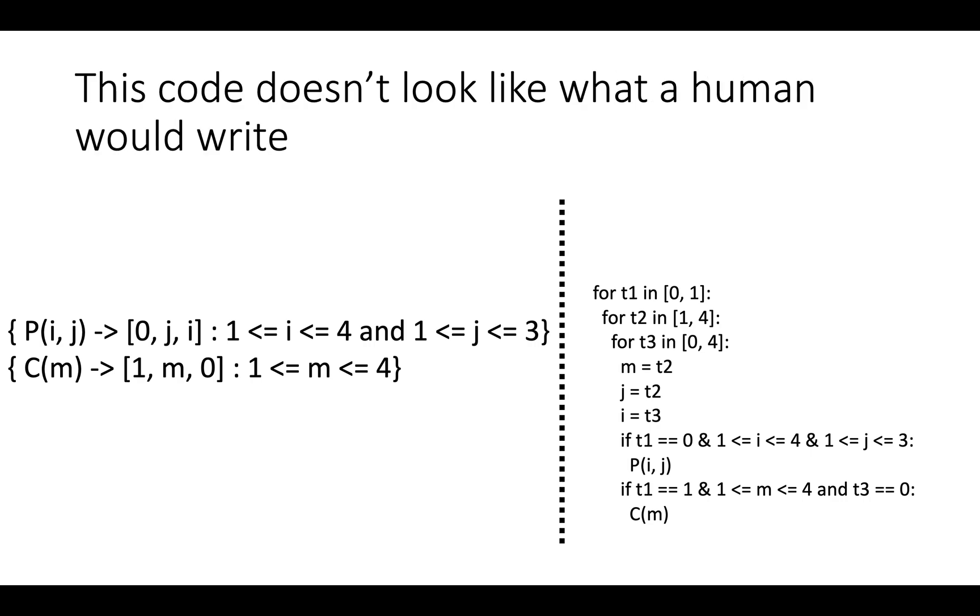Now you might have noticed that this code doesn't look like what a human would write. If you carefully check it, you'll find that this does actually represent the same execution order that we talked about earlier on with the permuted loop nests. But it doesn't look anything like the kind of idiomatic C or C++ code that you might see a human programmer write.